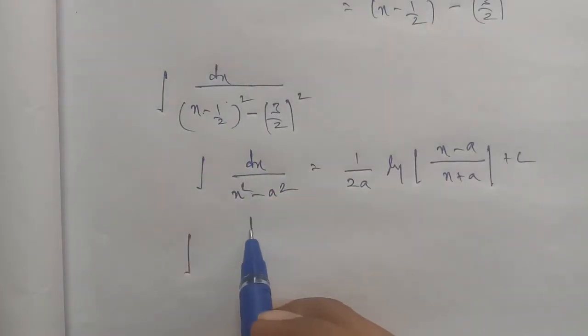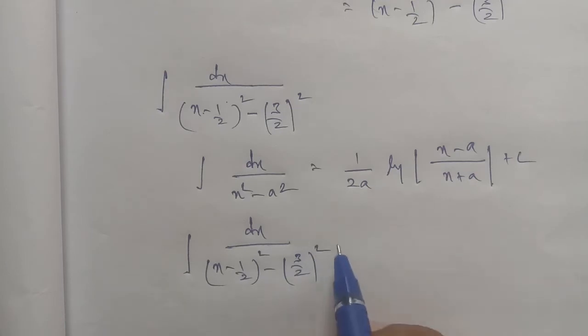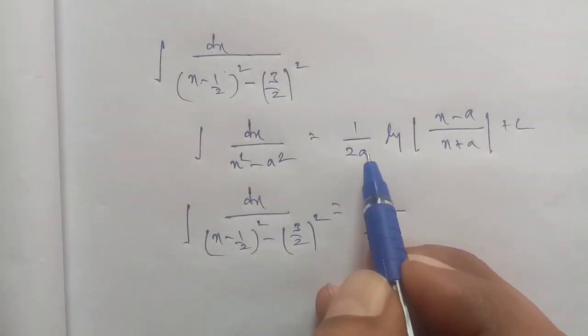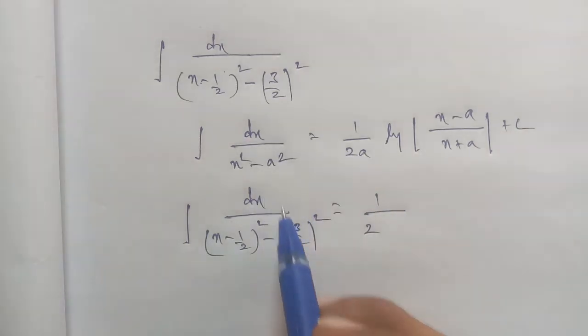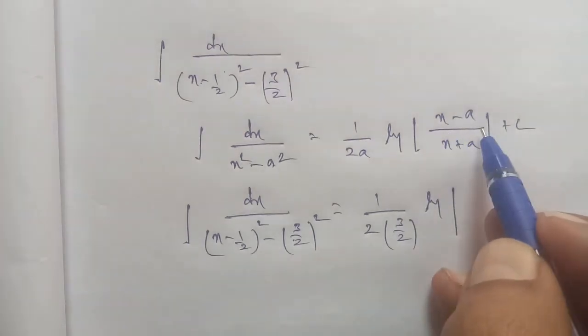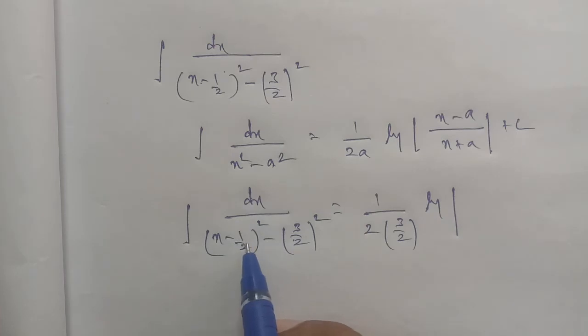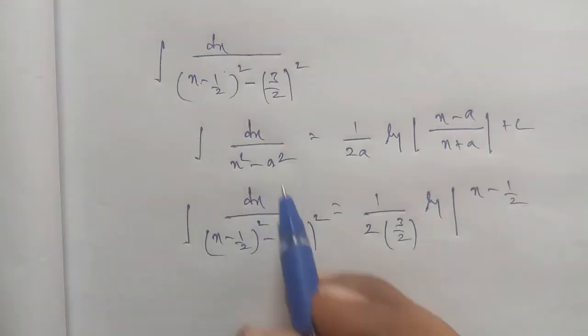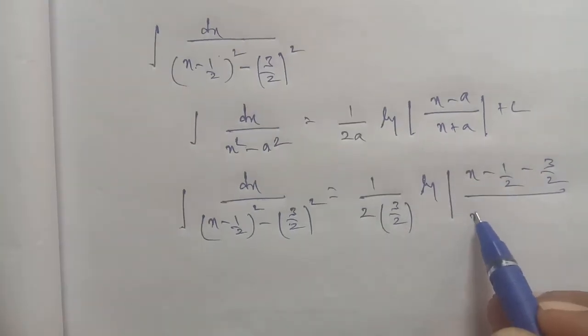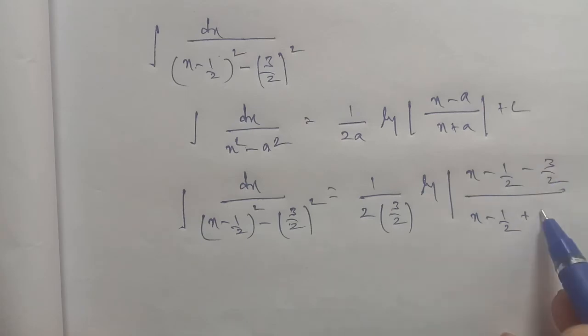So applying this formula: integral dx by [(x minus 1/2) whole square minus (3/2) whole square] equals 1 by 2 times 3/2, log of [(x minus 1/2) minus 3/2] divided by [(x minus 1/2) plus 3/2], plus c.